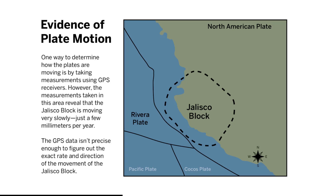Evidence of plate motion: One way to determine how plates are moving is by taking measurements using GPS receivers. However, the measurements taken in this area reveal that the Jalisco block is moving very slowly — just a few millimeters per year. The GPS data isn't precise enough to figure out the exact rate and direction of the movement of the Jalisco block. The GPS data is inconclusive as to how the Jalisco block is moving. Because of this, many scientists have gathered data and other information about this area to try to figure out what is happening there.